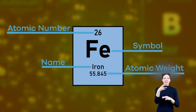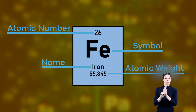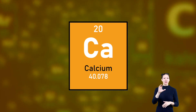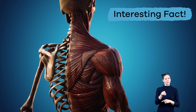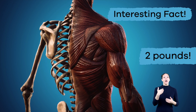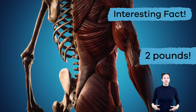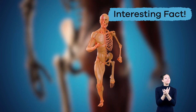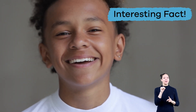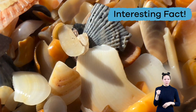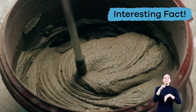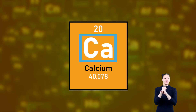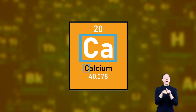Each element has a name and a chemical symbol. This is the symbol and name for the element calcium. Here's an interesting fact: you have about two pounds of it inside your body! It is mostly located in your bones and teeth. Calcium is also found in milk, seashells, and in cement. Like most elements on the table, the abbreviation for calcium starts with the same letter as its name.